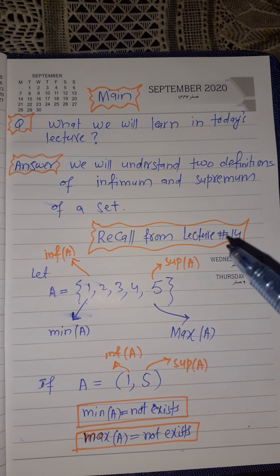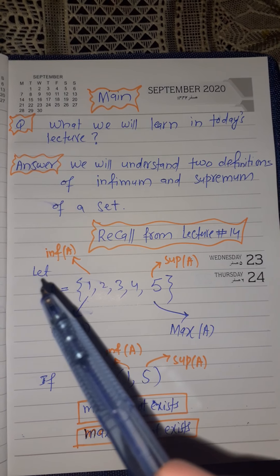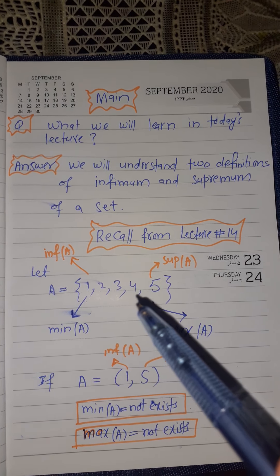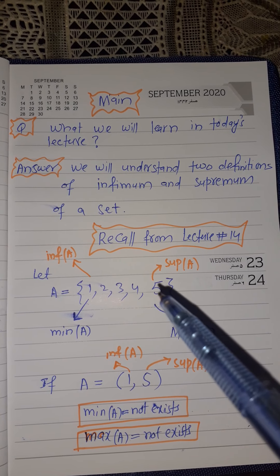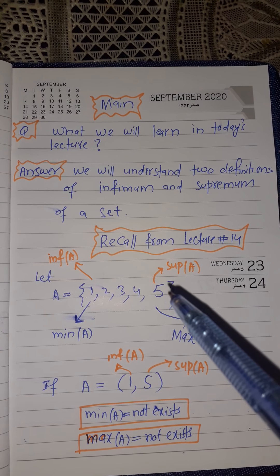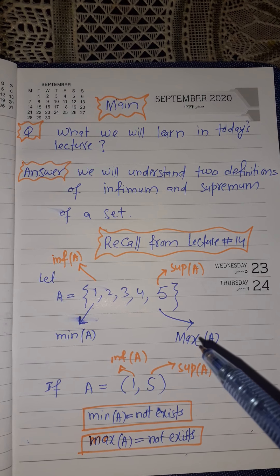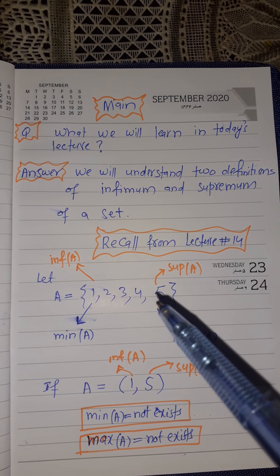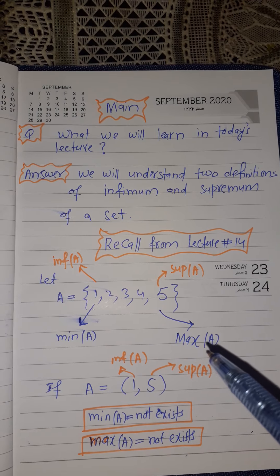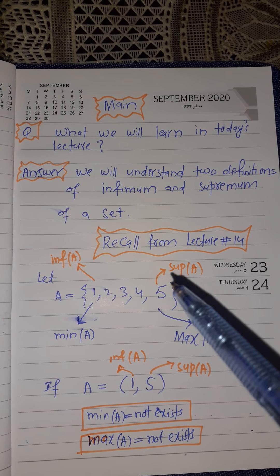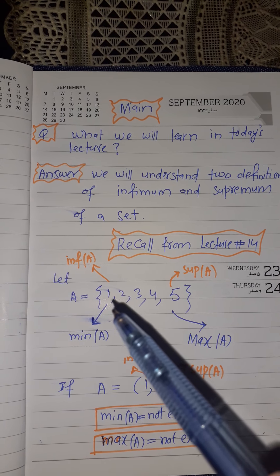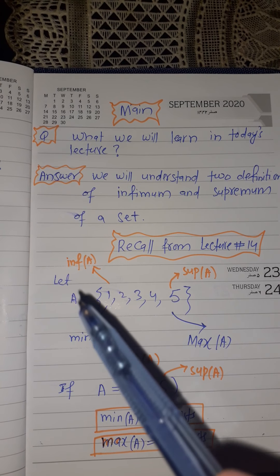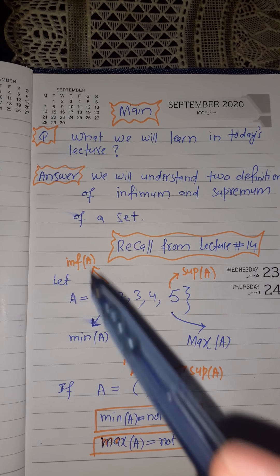Recall from lecture number 14, the last lecture, that if we have the set {1, 2, 3, 4, 5}, then five is the maximum element and the supremum of this set is also five. Maximum and supremum are the same in this case. The minimum of this set is one and the infimum is also one.